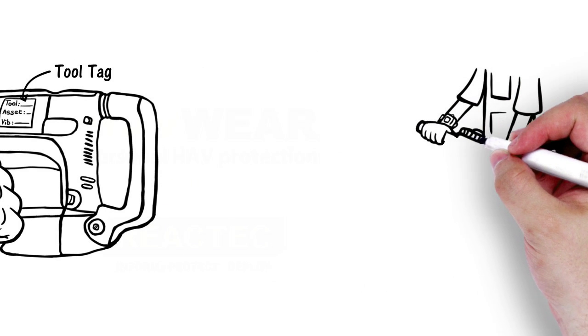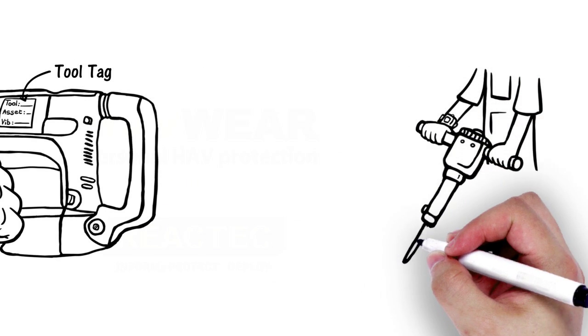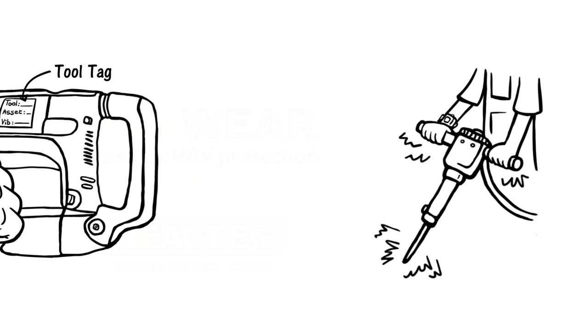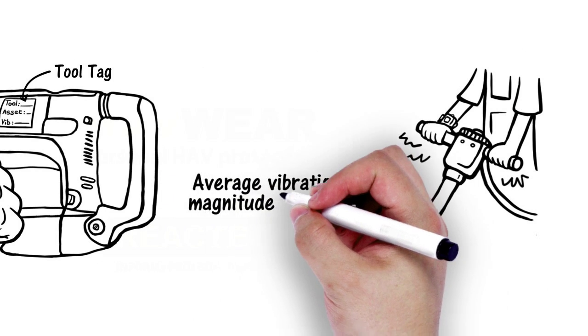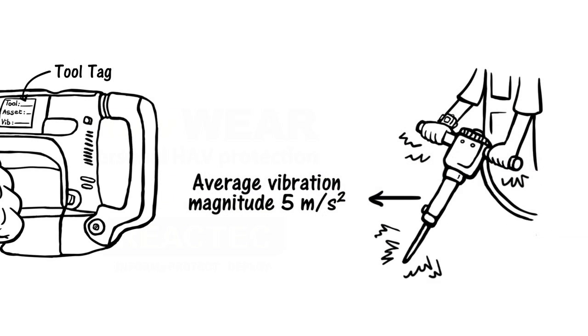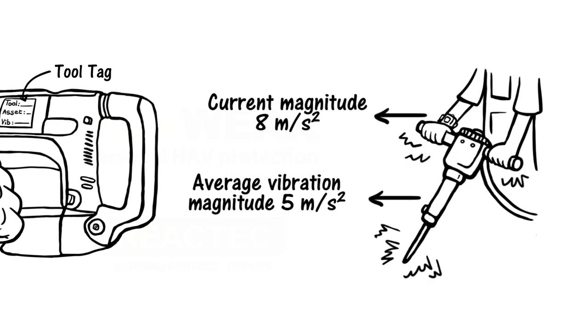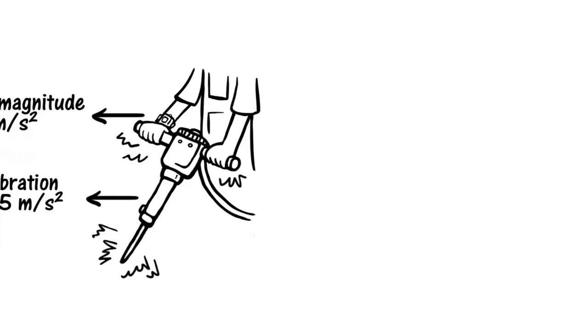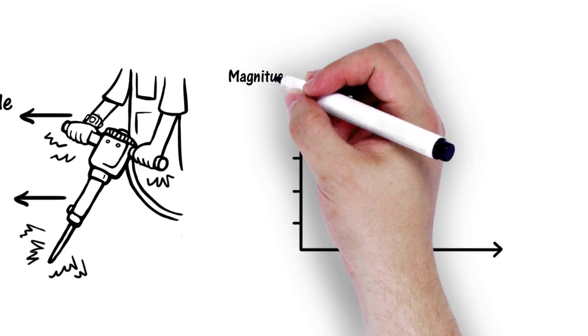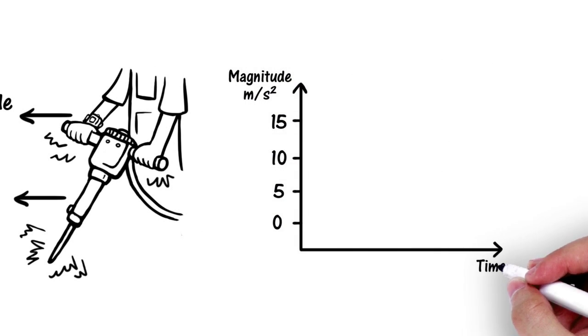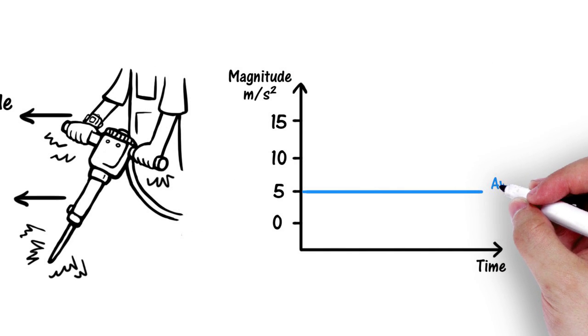But what is truly unique about the Havware is that a company can decide to either calculate exposure points using predefined tool vibration magnitudes or from the wearer's actual wrist vibration during tool use. Measuring actual wrist vibration to calculate exposure points can provide a more accurate representation of exposure from tool use in the field.